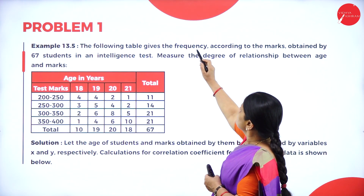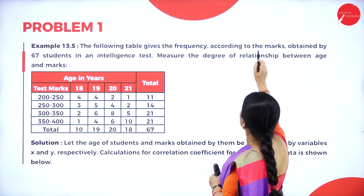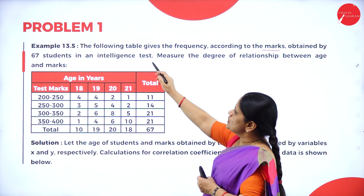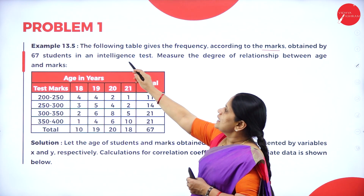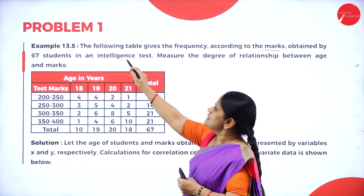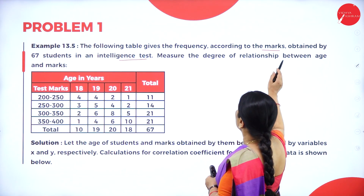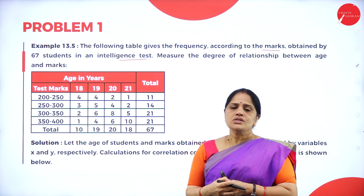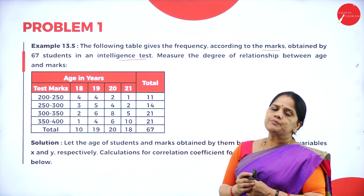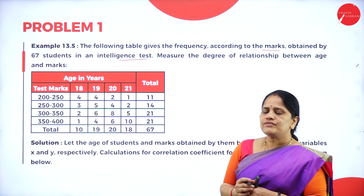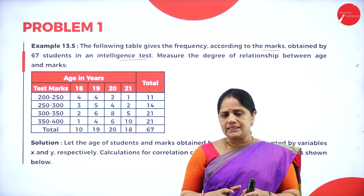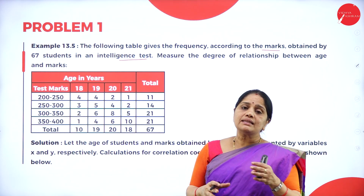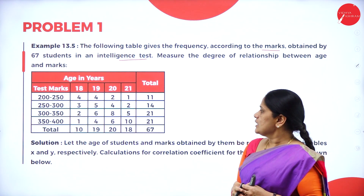The following table gives the frequency according to the marks obtained by 67 students in an intelligence test. We have to measure the degree of relationship between the age and the marks. So in this problem we have to find the correlation between the age of the students and the marks scored by the students.